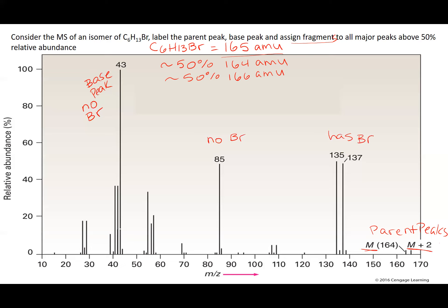So let's analyze starting from the highest weight, 135 and 137. So I'm simply just going to take 164, which is the mass of the parent, minus 135, which is the fragment that has bromine 79. Subtract them and I actually get 29. So that is loss of an ethyl fragment, CH2CH3 loss.